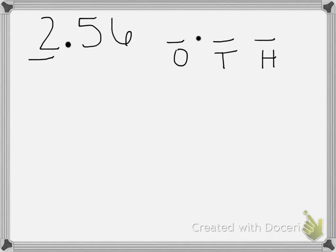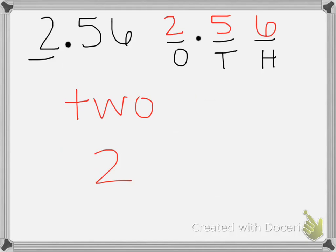This number, we're looking for the value of the 2. We have 2 and 56 hundredths. The 2 is in the ones place, so it has a value of 2. Since it comes before the decimal point, we don't need to have any decimals to show the value of 2.